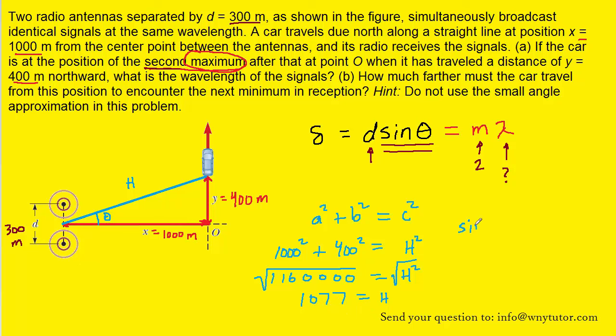We can now figure out what the sine of theta is. So sine of theta is going to equal the opposite side, which is 400 in our triangle, divided by the hypotenuse, which we just found to be 1,077. So this term right here, the sine of theta in the equation, we can substitute in 400 over 1,077 in there.